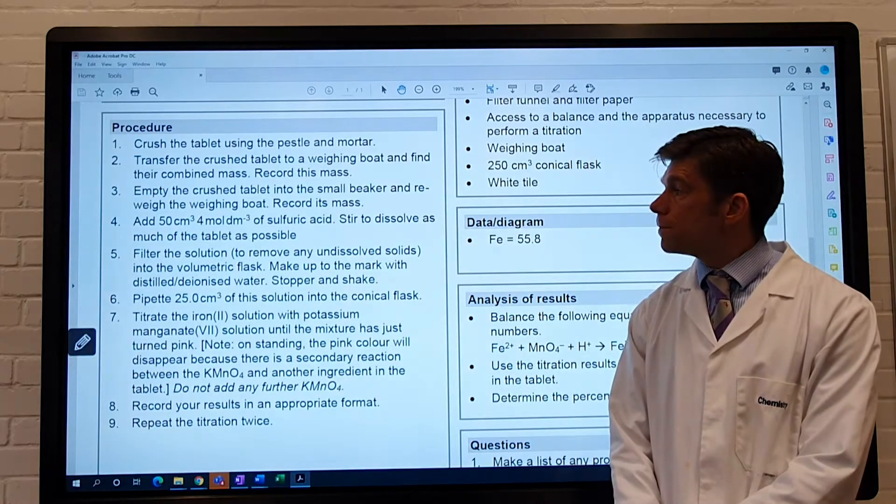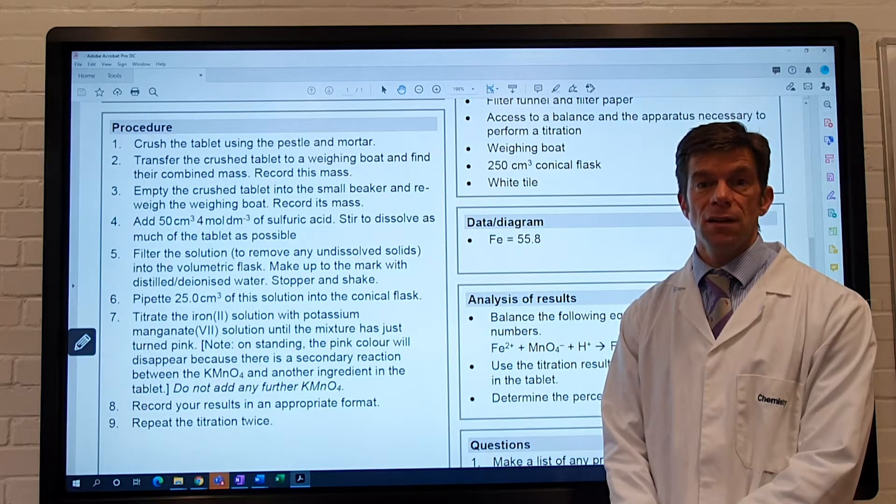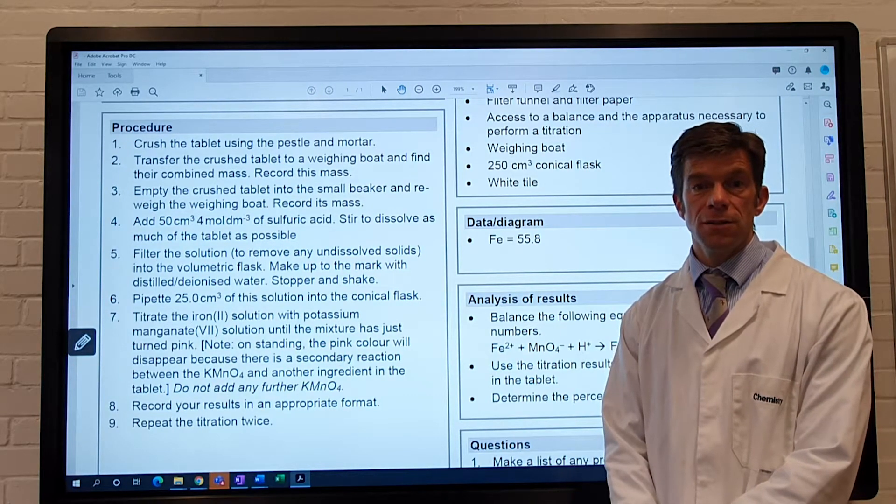Step 4, add 50 cm³ of 4 mole per dm³ sulphuric acid, stir to dissolve as much of the tablet as possible.